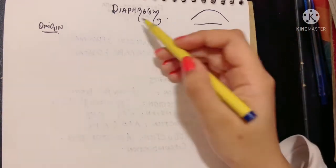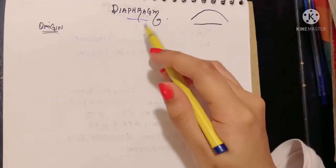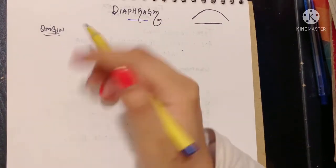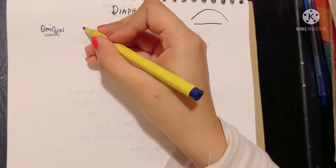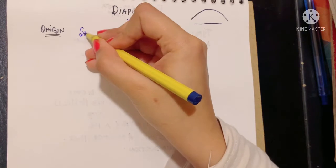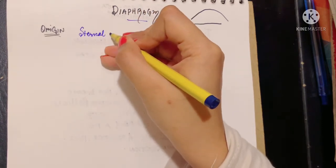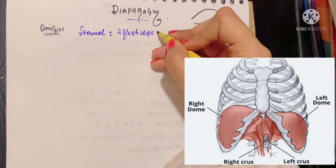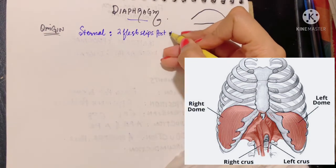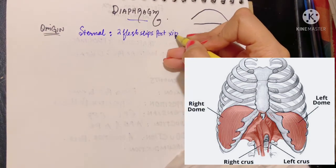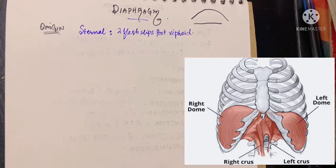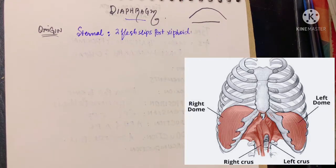Since we are talking about the diaphragm, we are talking about the inferior aperture which starts with the xiphoid process. The sternal origin of the diaphragm is from two fleshy slips posterior to the xiphoid process, which is the tapering end of the body of the sternum.